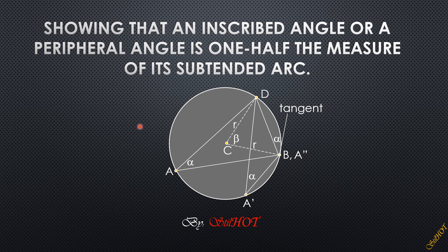If you find my videos interesting and important to your studies, please don't forget to subscribe. In this video, I'm going to show that an inscribed angle or peripheral angle, denoted alpha here, is one half the measure of its subtended arc. This peripheral angle alpha subtends arc BD in this circle, and arc BD is described by the measure of the central angle beta.